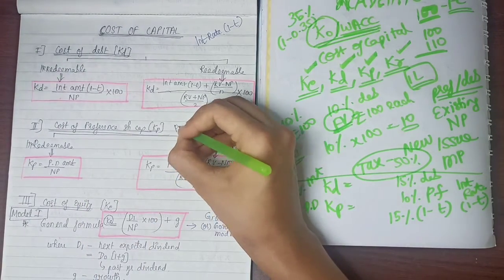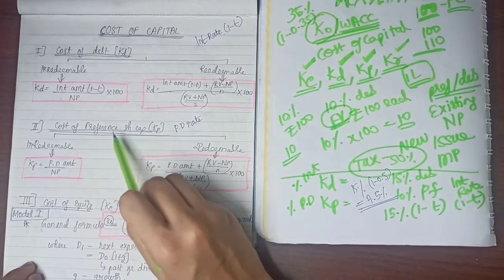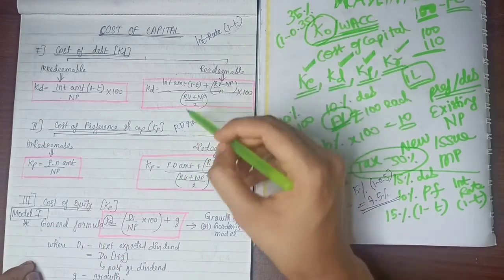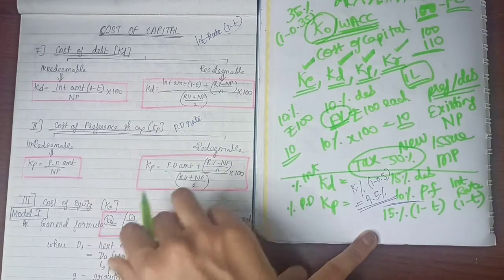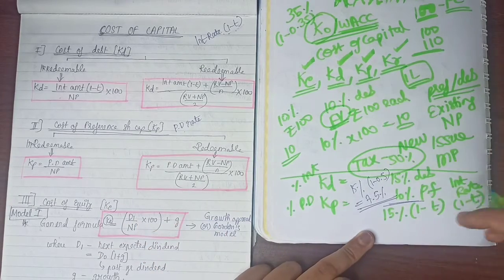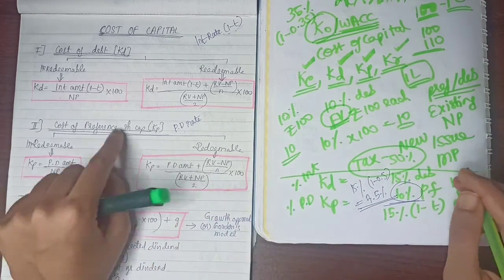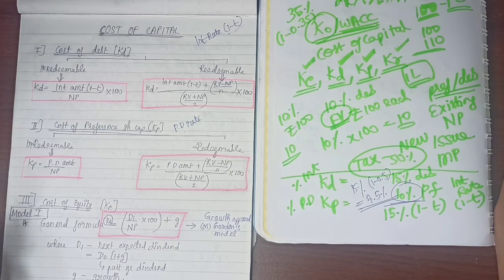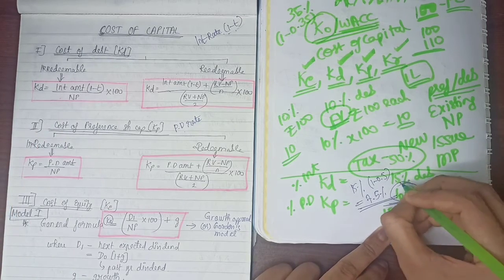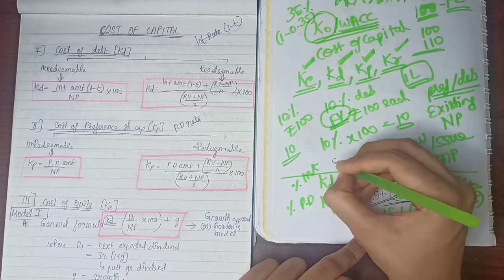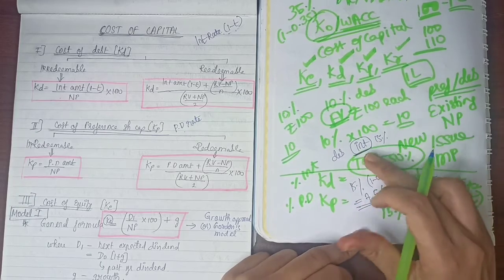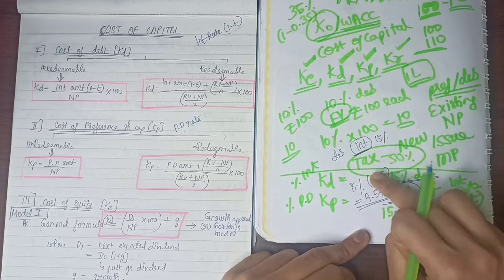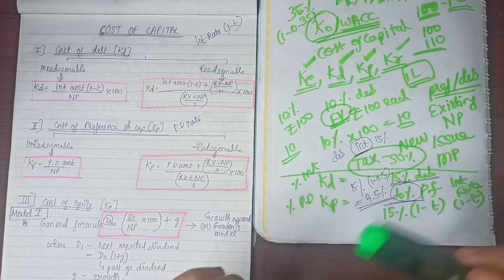If the preference dividend rate is given as 10% and no other information about net proceeds or market value is available, take 10% itself as your KP. Also note that in questions, the interest rate may also be referred to as the coupon rate — coupon rate and interest rate are the same.